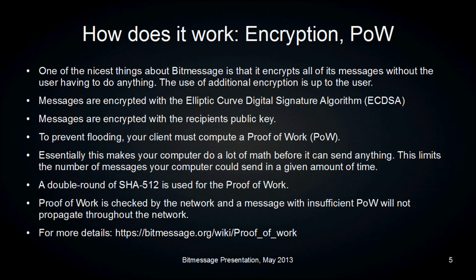To prevent flooding, your client must compute a proof-of-work, similar to what's used on the Bitcoin network. It essentially makes your computer do a lot of math before it can send anything, limiting the number of messages your computer can send in a given amount of time. The proof-of-work uses a double round of SHA-512 encryption, which generates a checksum that is easily checkable. Only valid messages with sufficient proof-of-work will be sent out through the network. For more details about proof-of-work, visit the wiki page.